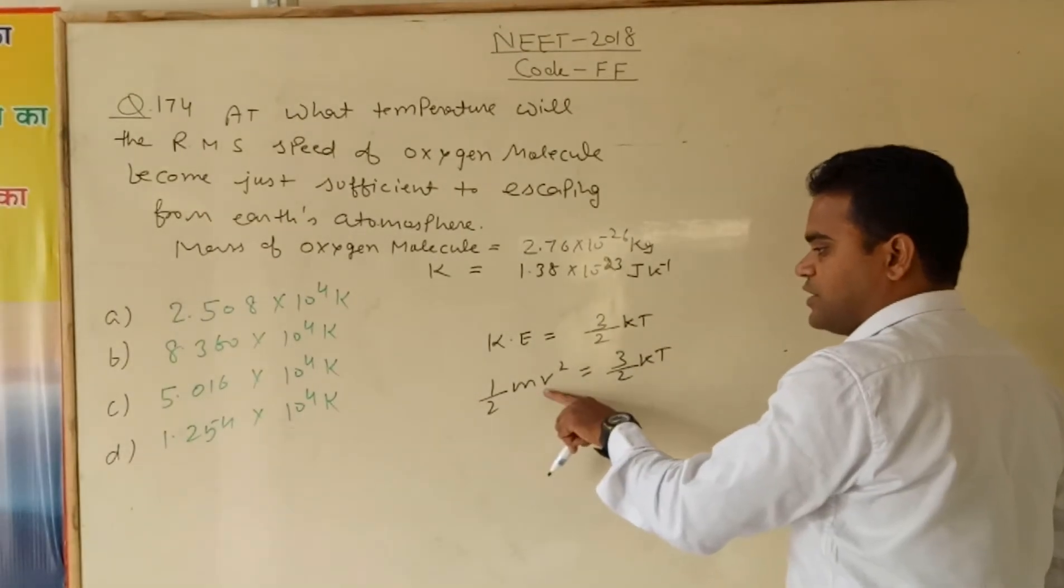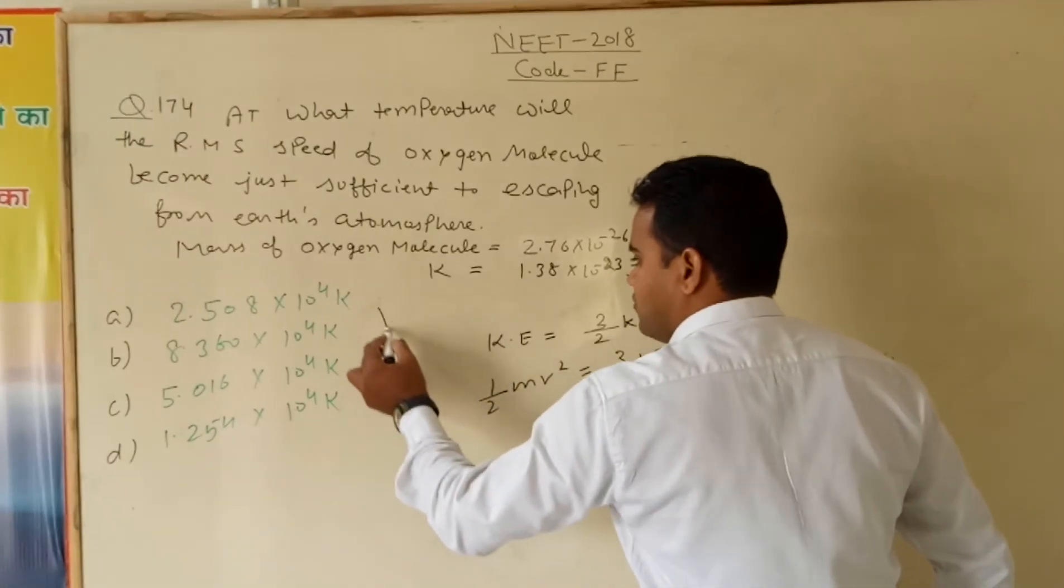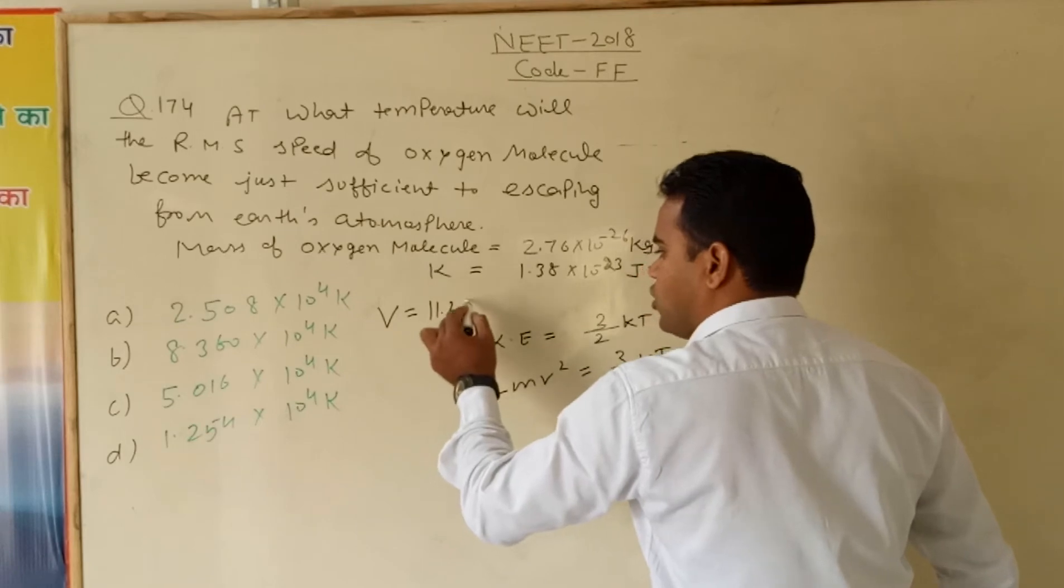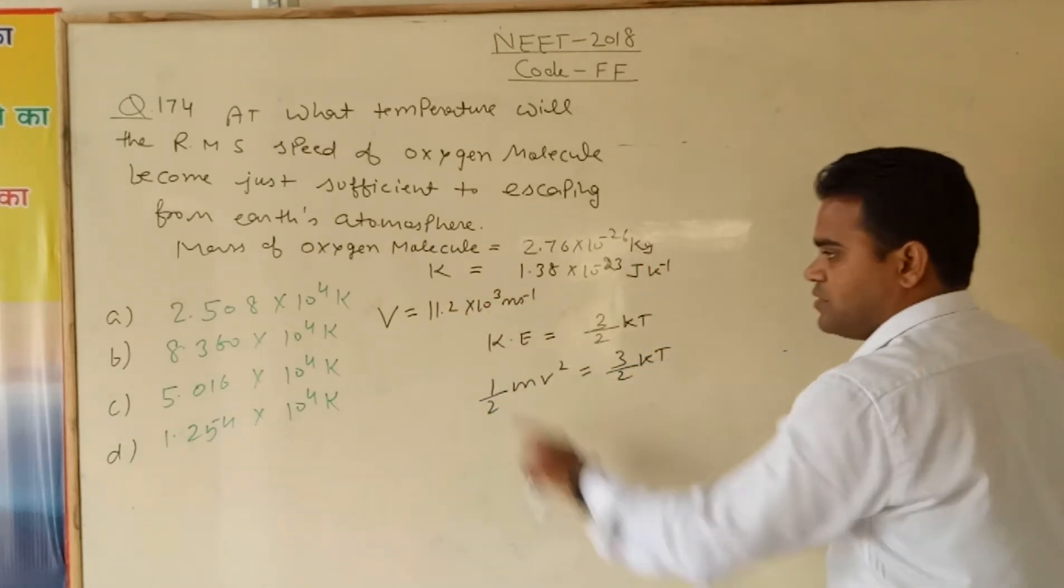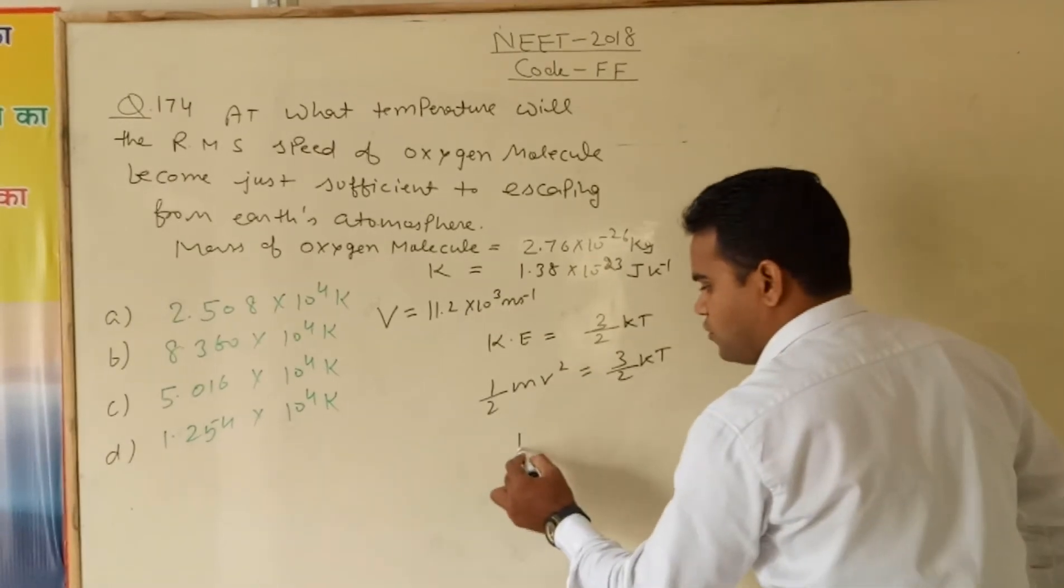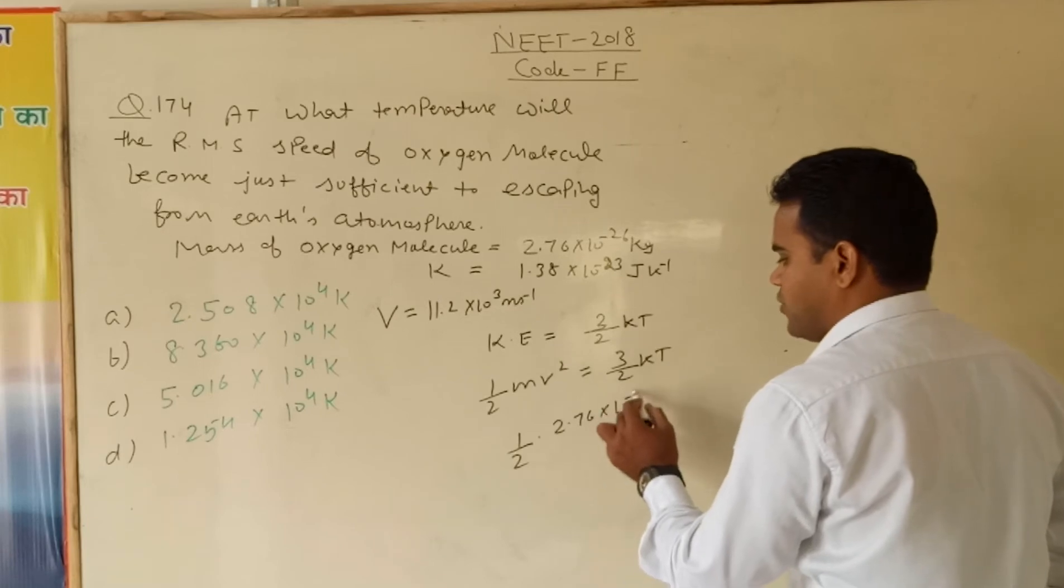Mass of one molecule times velocity, which is equal to Earth's escape velocity that we know is 11.2 km per second, which is 11.2 times 10 to the power 3 meter per second. So we put the value here, so finally 2.76 into 10 to the power minus 26 times 11.2 times 11.2 times 10 to the power 6.